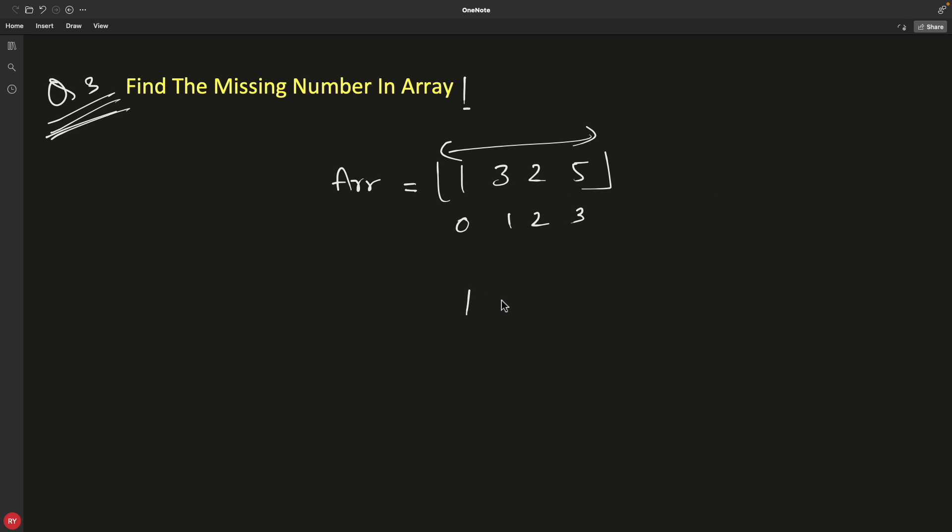You check: first position, is this 1? Second position, is this 2? Third position, is this 3? Fourth position, is this 4? No it is not, then I am missing 4 in this.